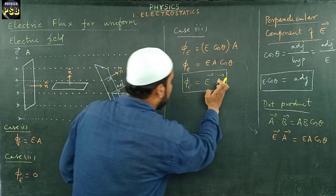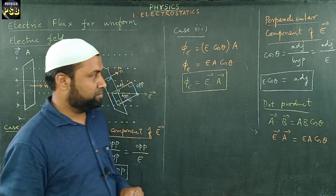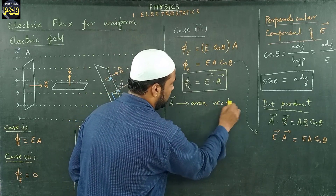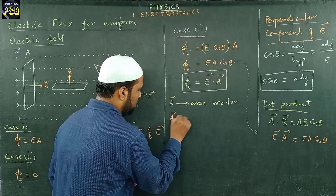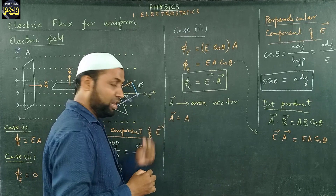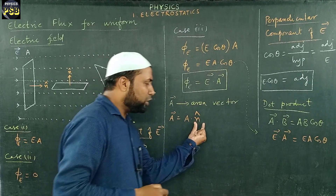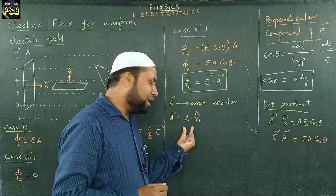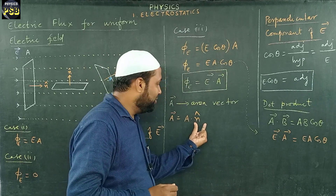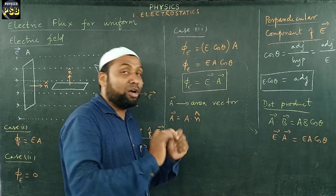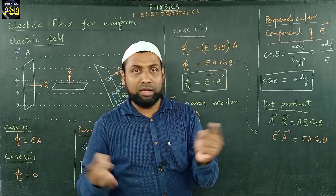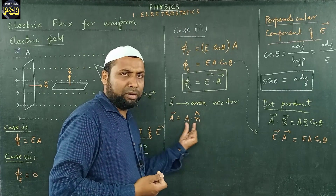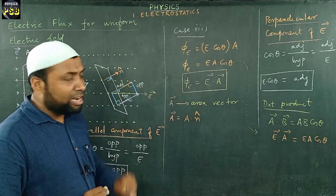Here, A vector is the area vector, which can be obtained if we multiply A, the magnitude of the area, with the unit vector n-cap. A unit vector is a vector which has magnitude equal to 1 along with some direction. When we multiply a quantity with the unit vector, the magnitude does not vary, because multiplying by 1 does not change the value — it only gains direction but the magnitude remains the same. This is the final expression we have obtained.